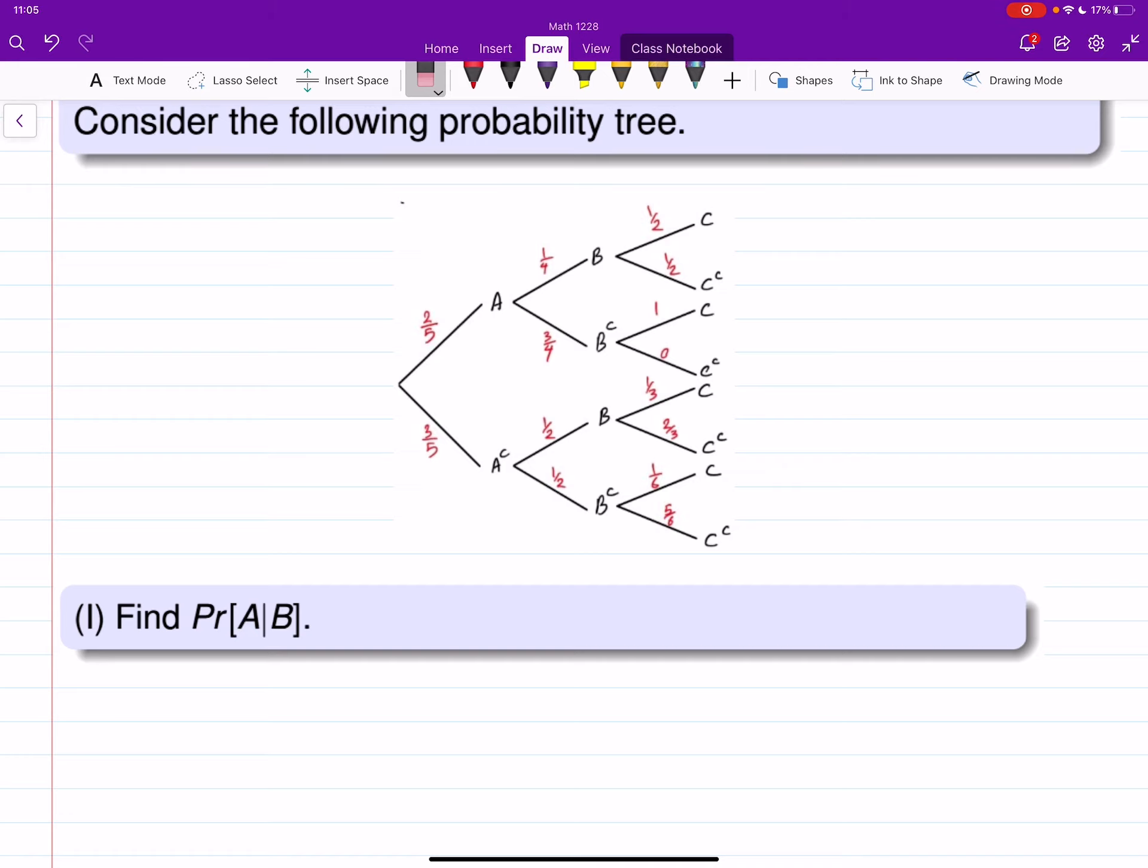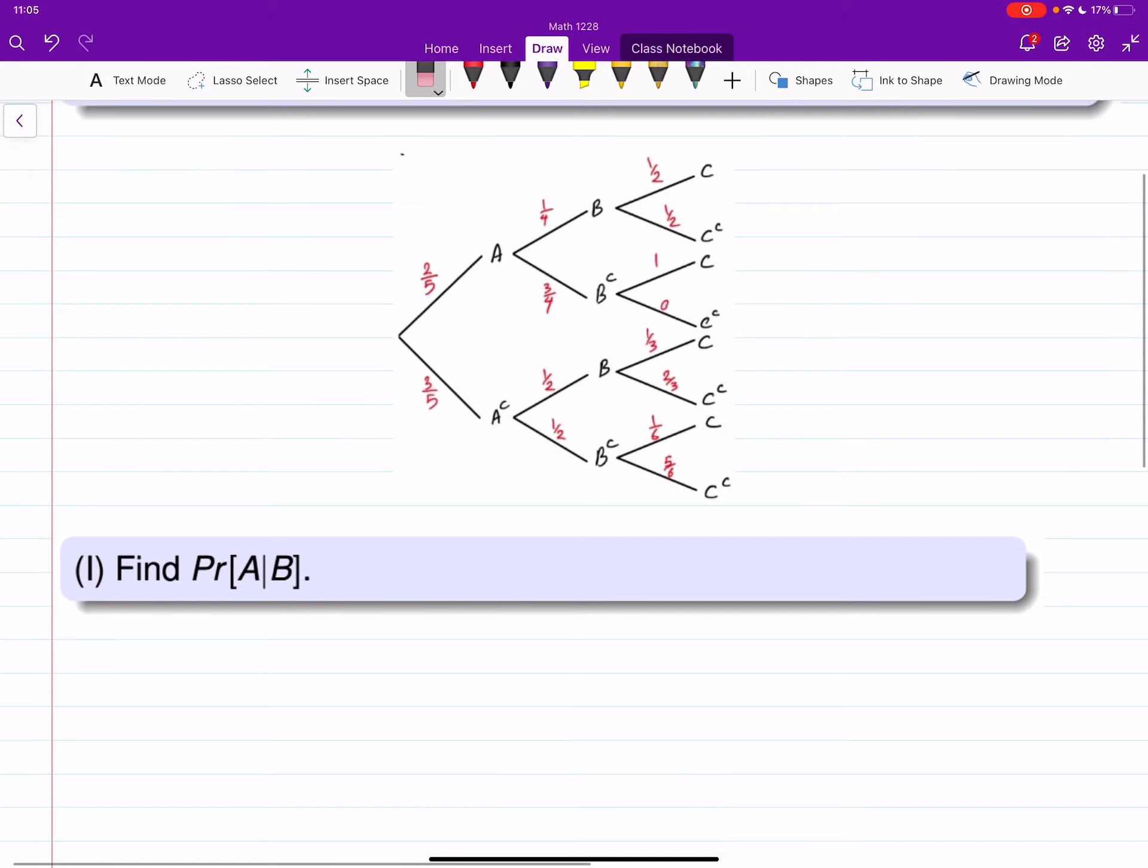First thing to note is that the order of the conditional probability we are trying to evaluate is not the same as the order of the tree. B is in the second level and A is in the first level of the tree, and the probability is asking for probability of something from the first level knowing probability of the second one. So this means you cannot find that probability on the tree, and to evaluate that we will use the formula: probability of intersection over probability of B.